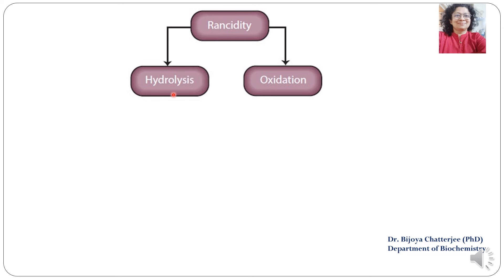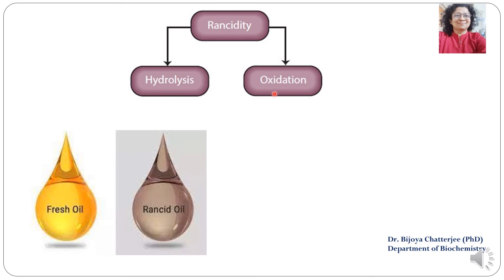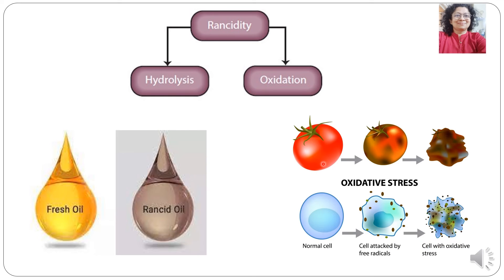Rancidity is of two types: hydrolytic and oxidative. Fresh oil becomes blackish or dark brownish in color when rancid. Oxidative rancidity is seen in vegetables and fruits — if you cut them or leave them unused for many days, they gradually turn darker and brownish in color due to oxidation. Free radicals attack normal cells, causing rancidity; cells under oxidative stress lose their shape and membrane integrity, leading to cell death.